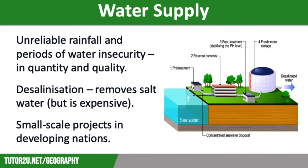This plant takes water from the River Thames and turns it into drinking water through the process of reverse osmosis. It removes water at low tide as the water has a lower salt content then. However, this desalination plant is expensive and uses a lot of energy.